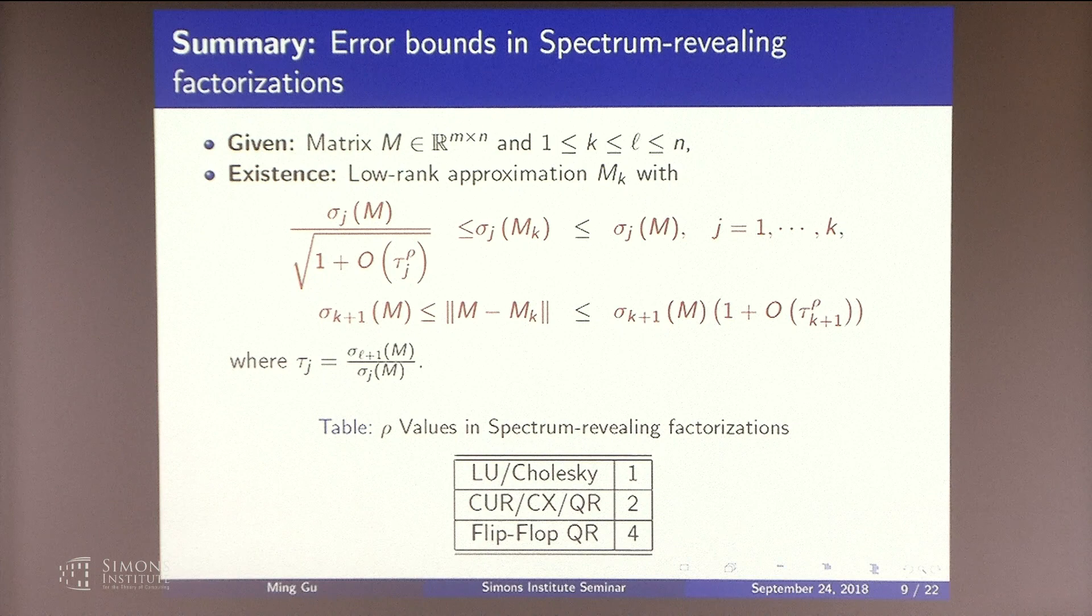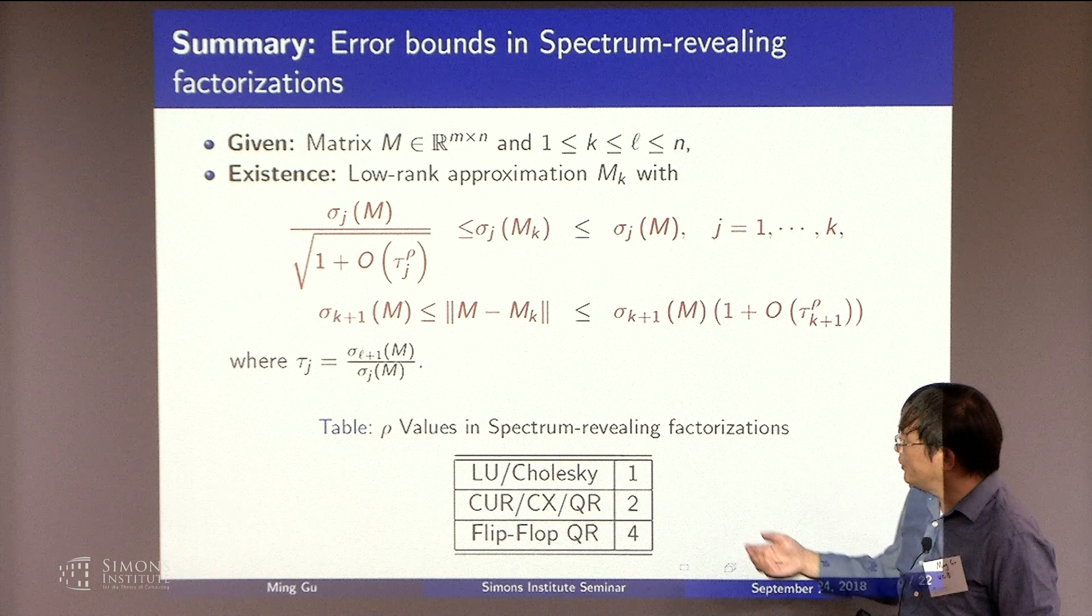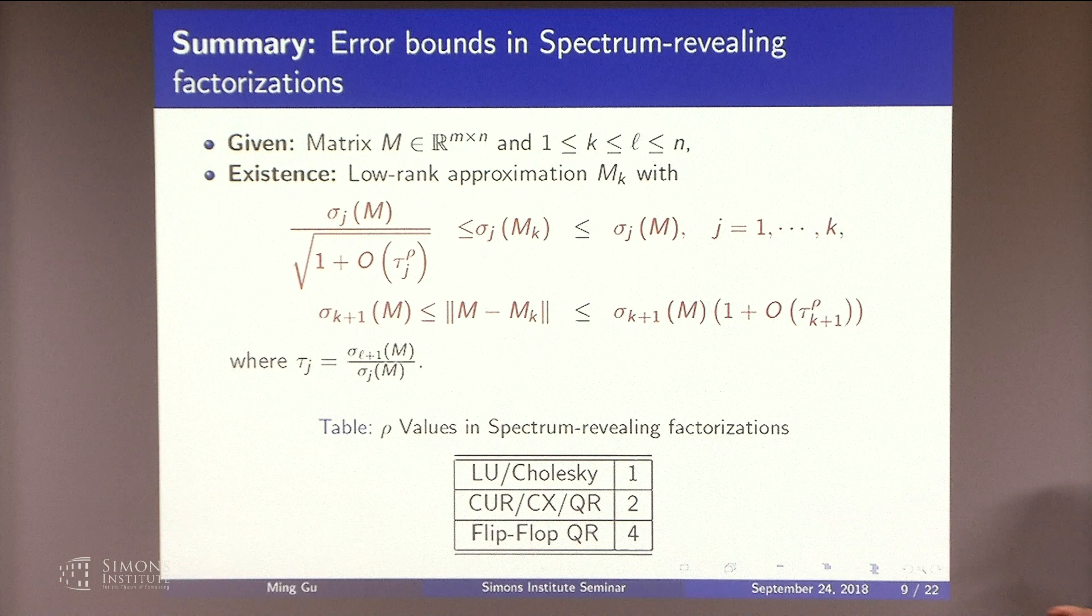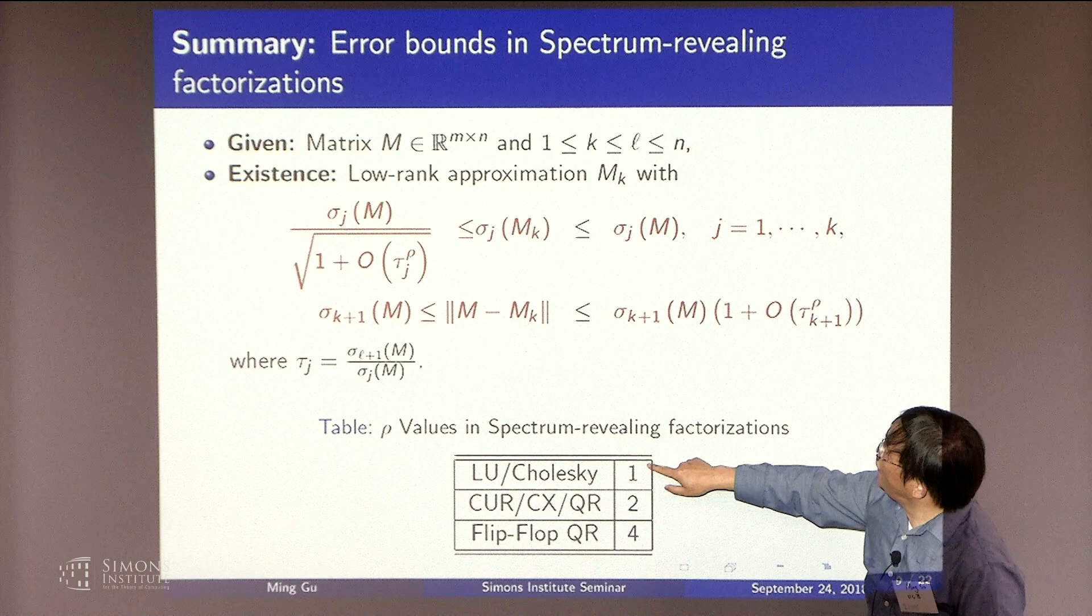So, typically, we have the LU factorization, the Cholesky factorization, the QR factorization. And the CUR and the CX, these are the images of these semi-organizers. But all of these, you can get these bounds. The only difference is in this tau value.